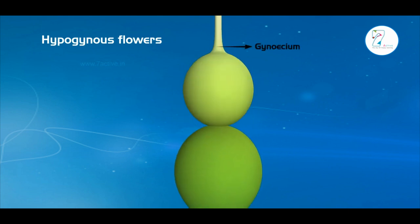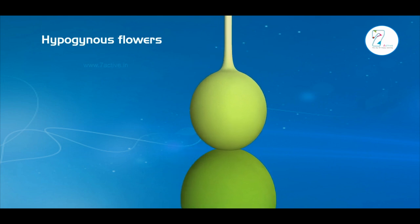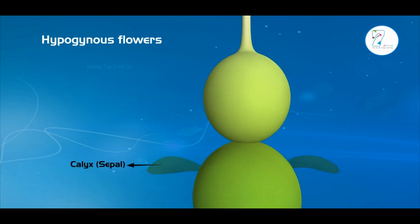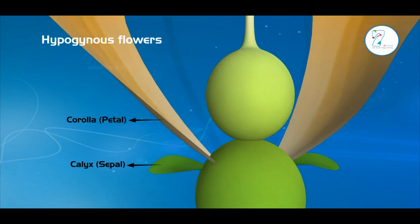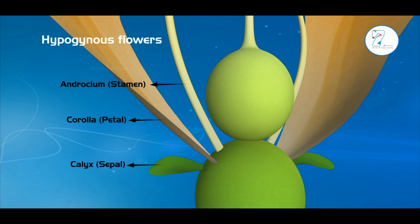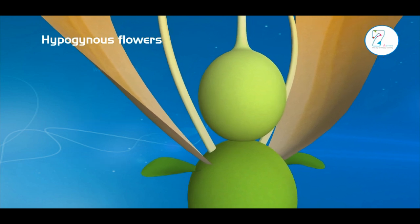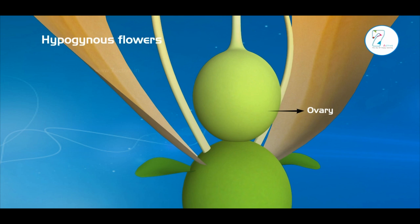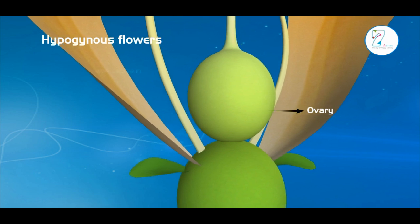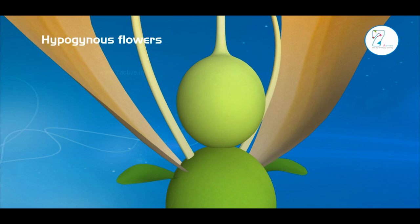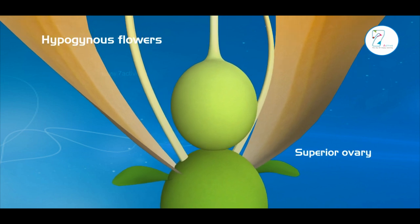The gynoecium is present at the tip of the thalamus. The remaining floral parts like calyx, corolla, and androecium are arranged at the base of the gynoecium. In this flower, ovary is completely present outside the thalamus. So it is called superior ovary.